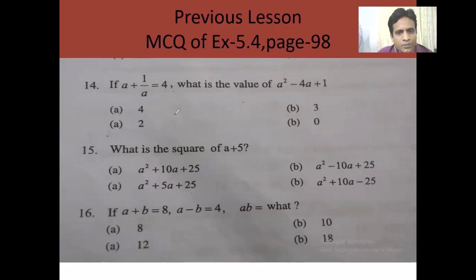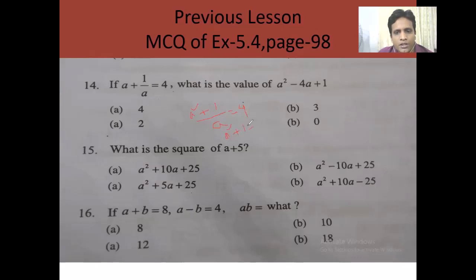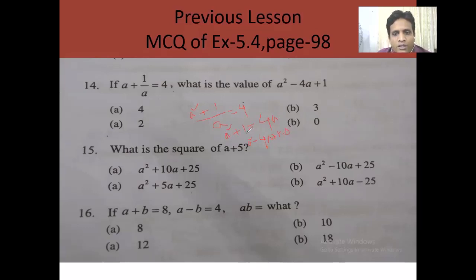This is an equation, so just take the LCM, which will be a. So a multiplied by a gives a squared, plus 1 equals 4. When you take 4a to the left side, a squared plus 1 equals 4a, which becomes a squared minus 4a plus 1. Taking 4a to the left side makes it equal to 0. So the answer is 0.